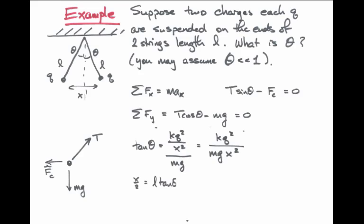This distance x can be found using the length of the string and the unknown angle of the strings with respect to the vertical direction. We know that x over 2 divided by L equals sine of theta. And since tangent of theta and sine of theta are roughly equal to one another, when the angle theta is small, this is roughly equal to L times tangent of theta.